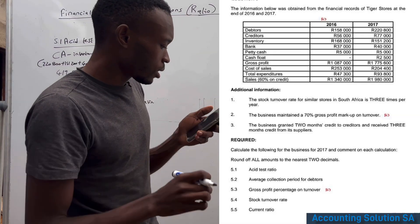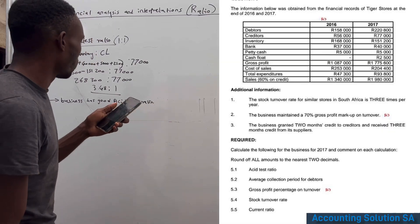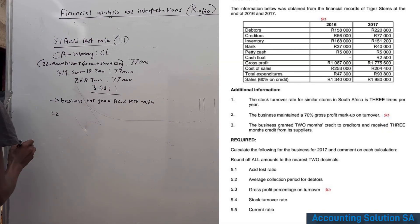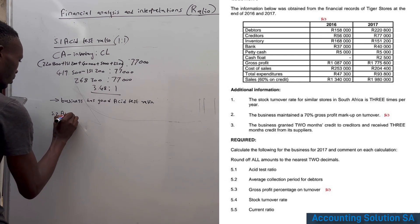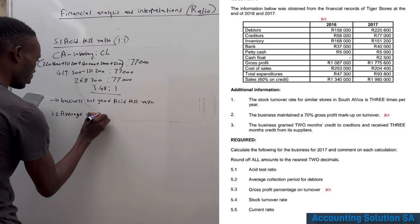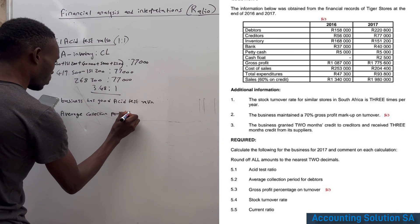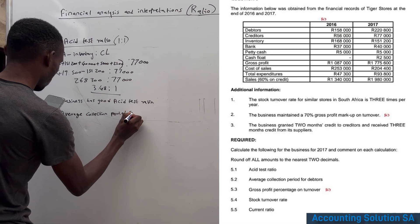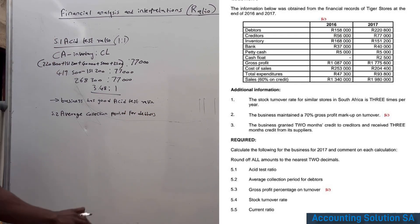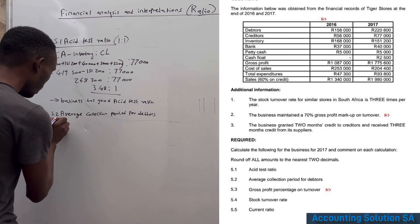Question 5.2 asks us to calculate the average collection period for debtors. We also have a creditors figure, but we are calculating for debtors here.